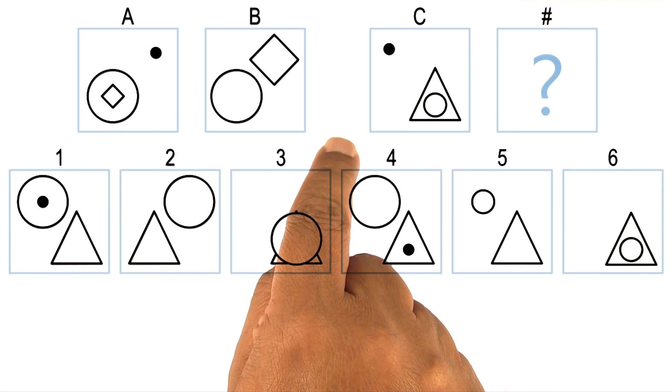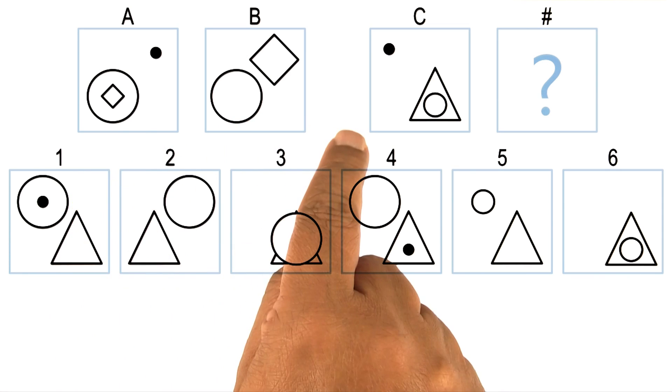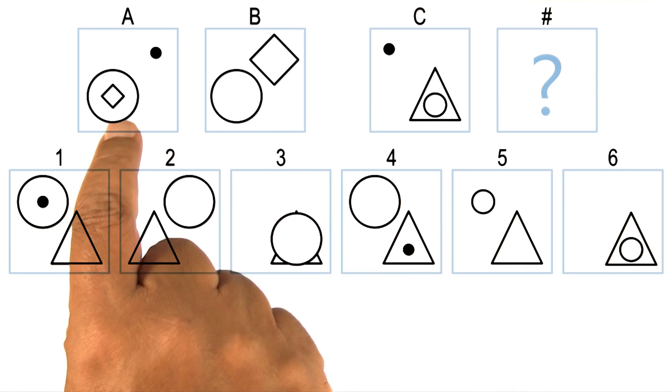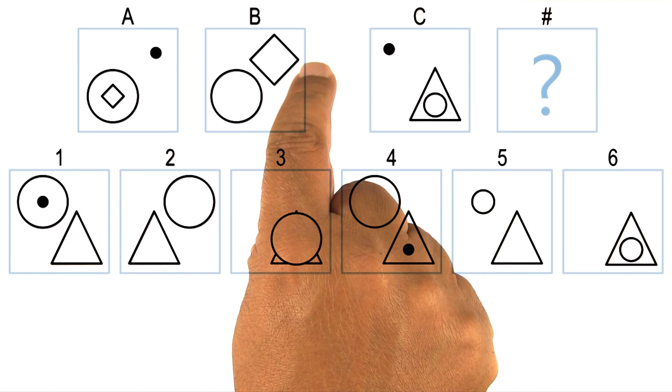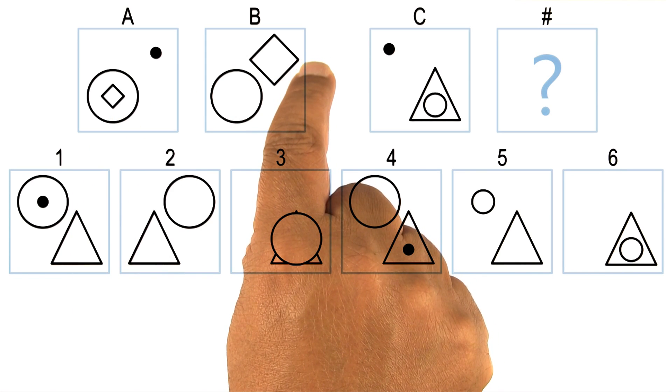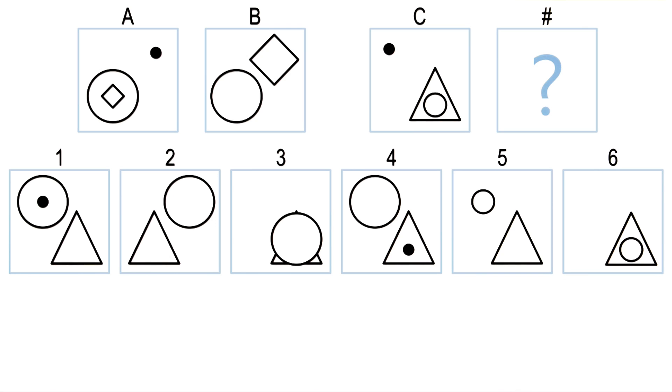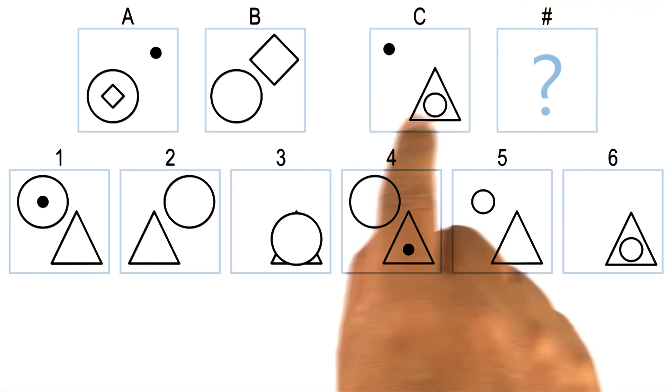In this case, if I look at the transformation between A and B, then I notice that the diamond inside the circle is now outside the circle and is larger. Now suppose I would have tried the same transformation from C to D.